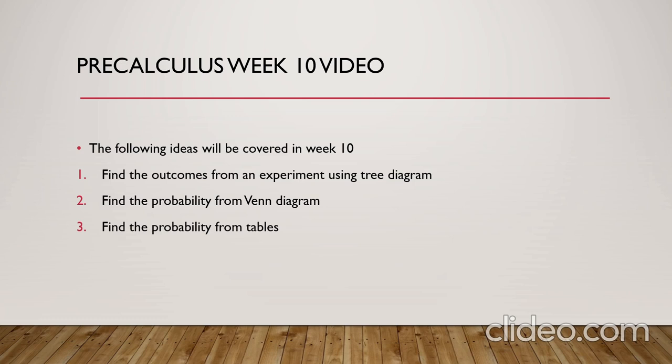The main condition is that the experiment will be done more than one time. After we write all the outcomes using the tree diagram, we will find the probabilities for each outcome. Then we will use this tree diagram to solve word problems related to this experiment.